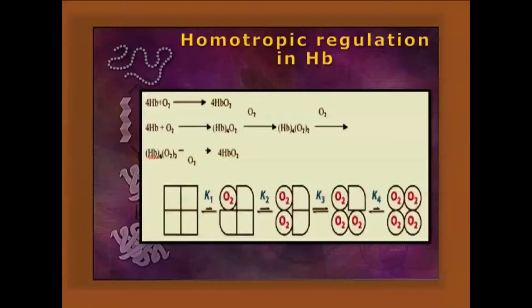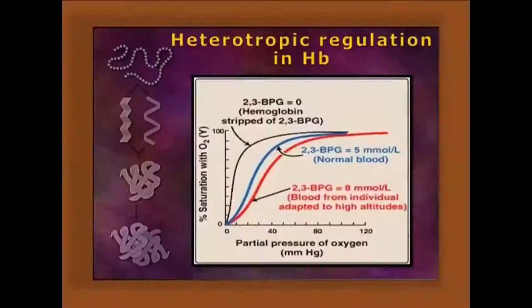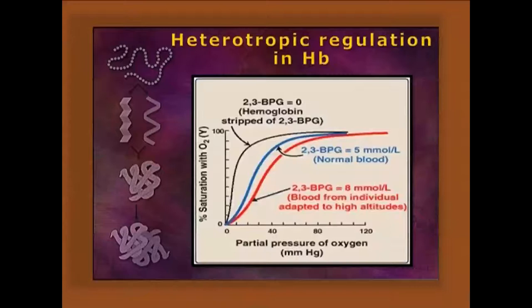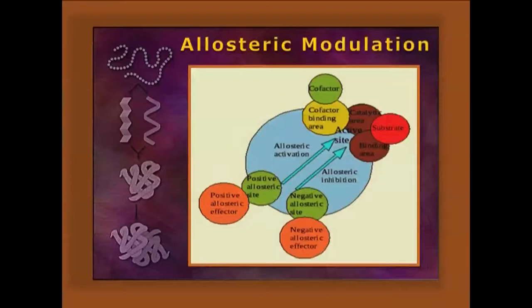Allosteric regulation can be either homotropic or heterotropic. Homotropic means the substrate or ligand itself acts as effector — for example, oxygen in hemoglobin is the substrate/ligand but also increases the affinity of other subunits to bind oxygen, making it a homotropic allosteric regulator. Heterotropic means something other than the substrate or ligand affects binding at the allosteric site. Examples include H+ (proton), carbon dioxide, and 2,3-BPG — these are heterotropic regulators whose binding to one subunit decreases the affinity of oxygen to other subunits. Allosteric modulation may be positive (increasing affinity) or negative — 2,3-BPG causes negative allosteric inhibition of oxygen binding in hemoglobin.